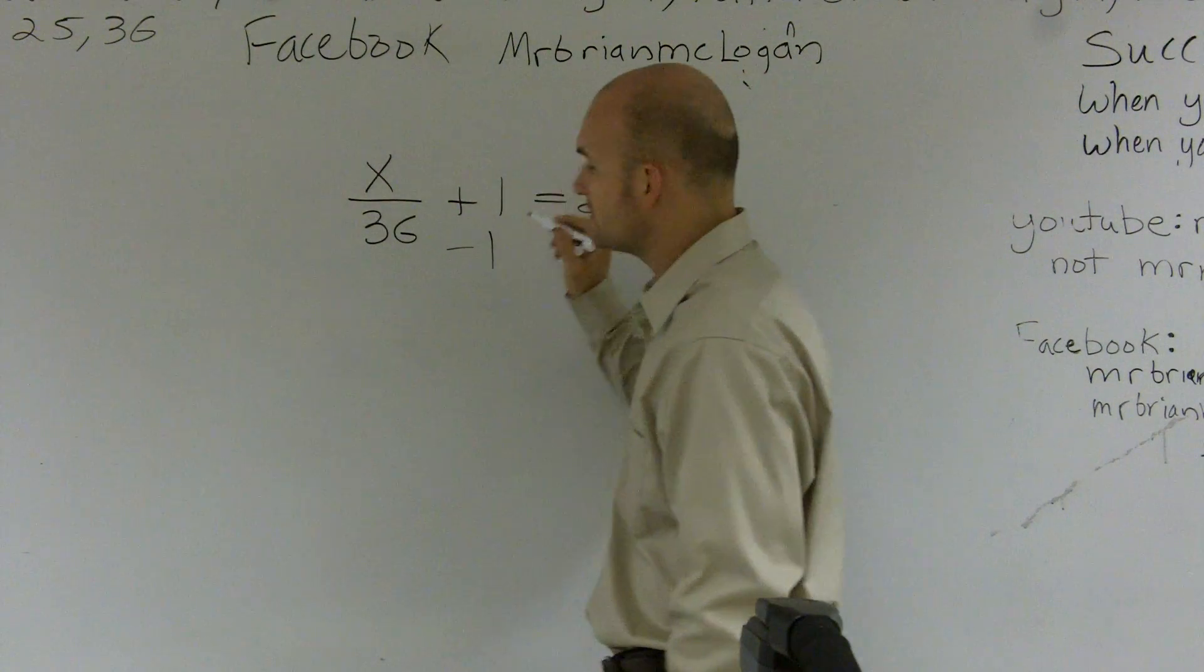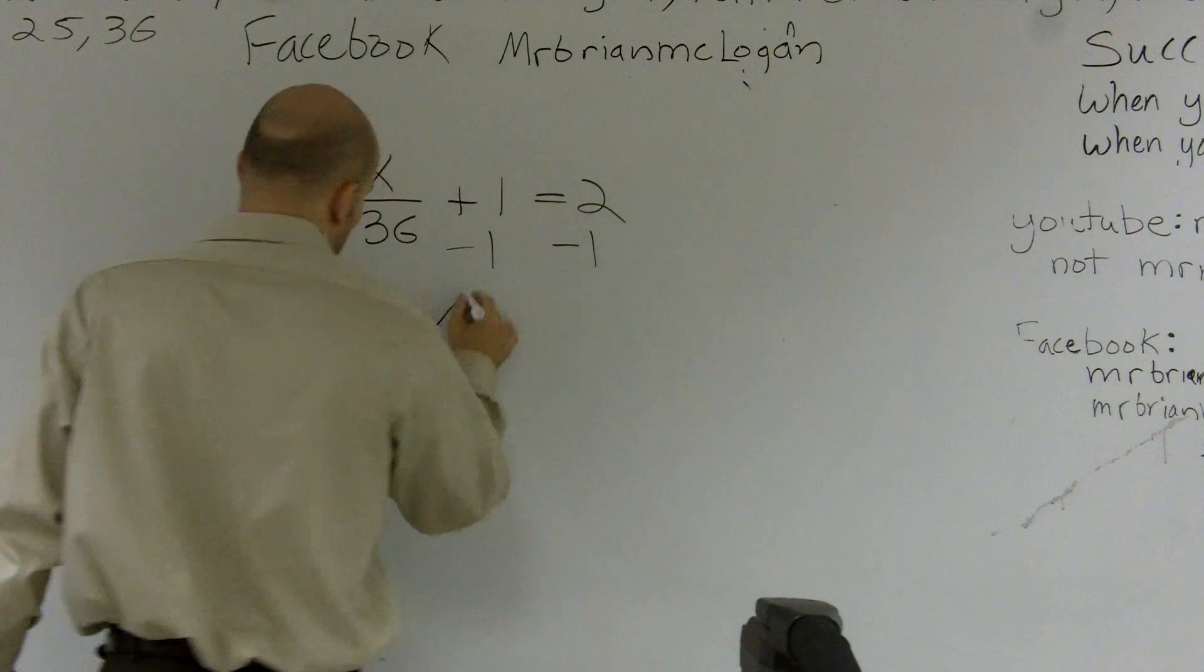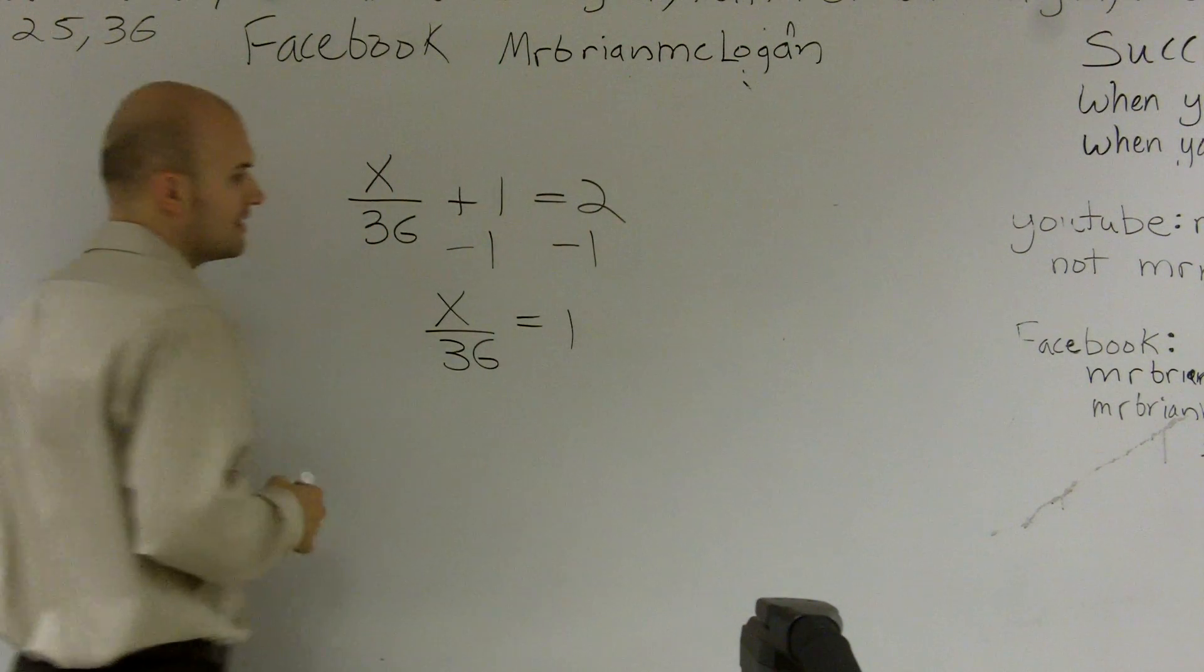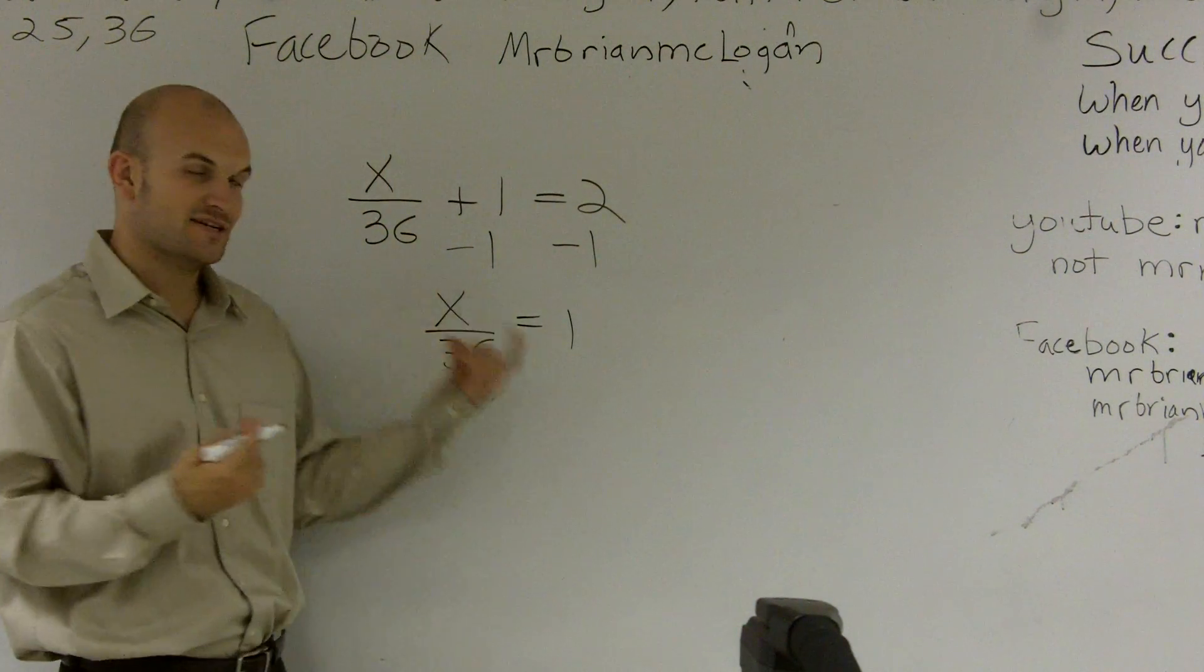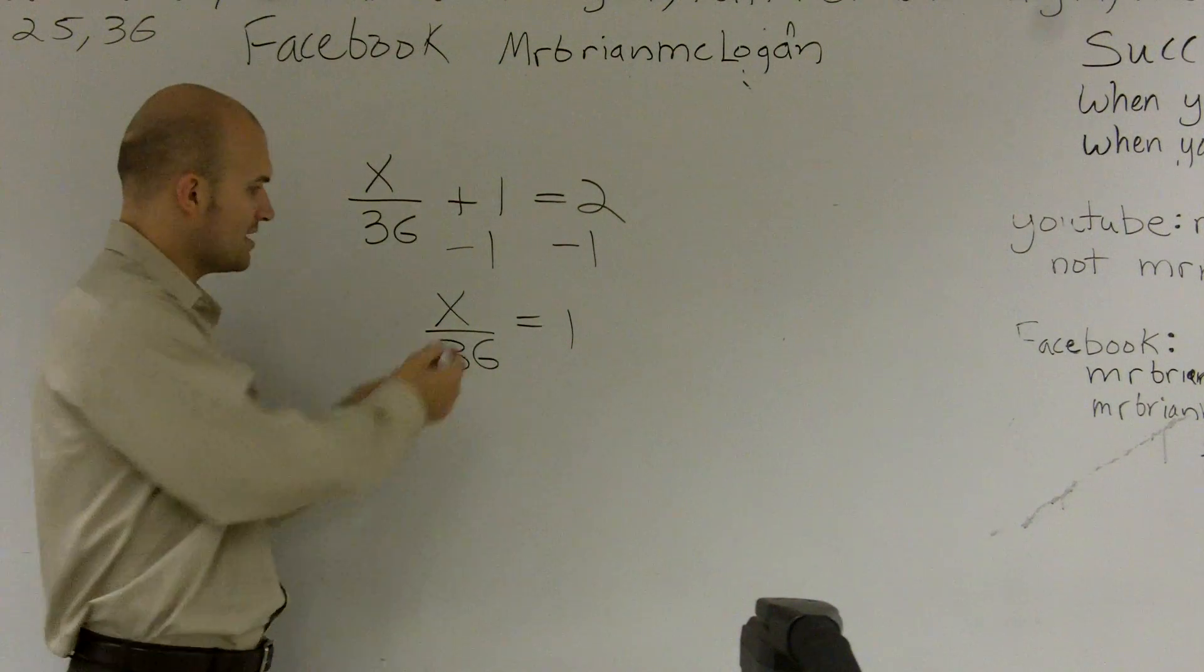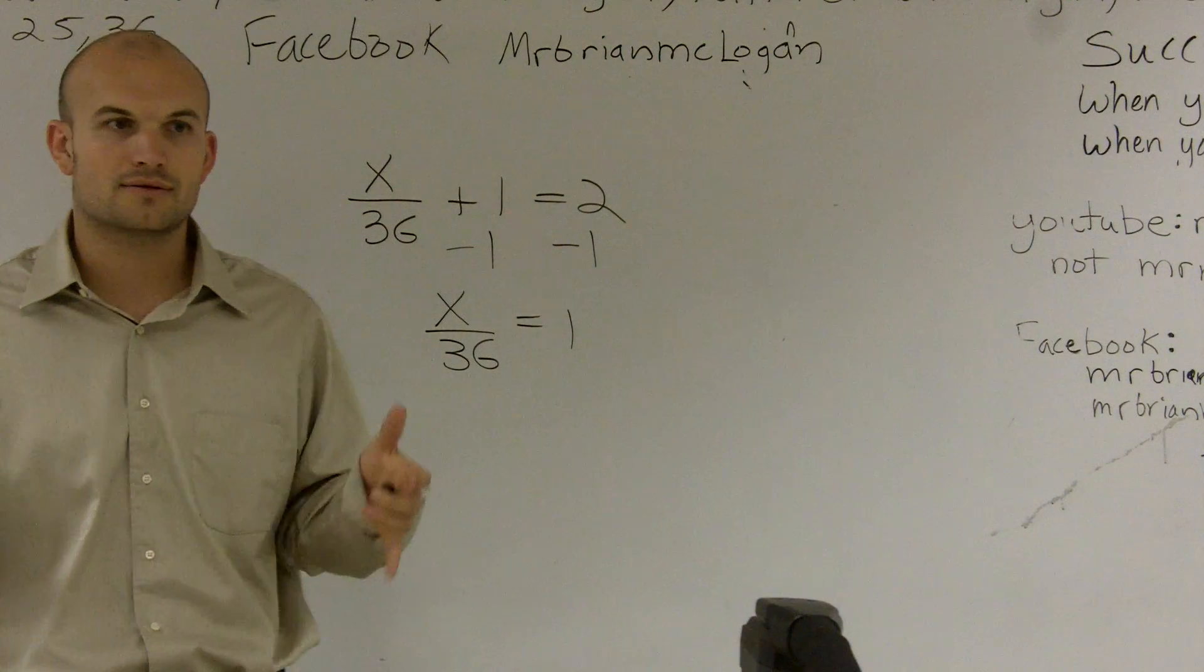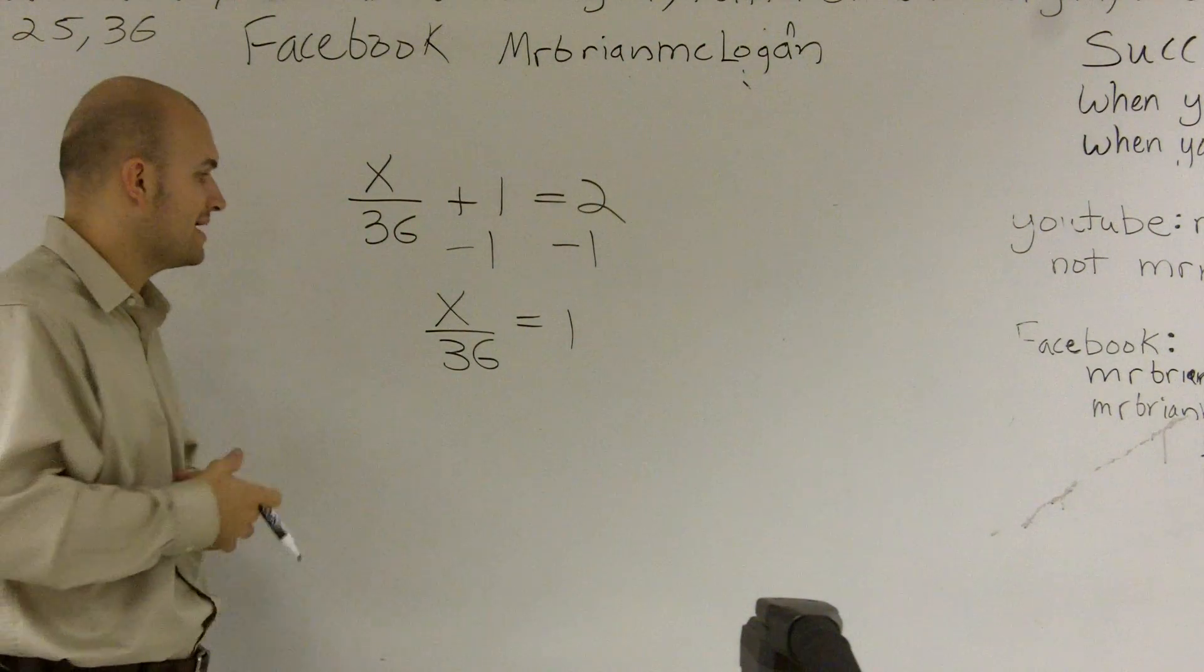Well, a 1 minus a 1 is going to give you 0. And that's helpful because what that just did was that freed up some space here on the left side. And eventually, why I'm doing this is I want to get this x by itself. Because I want to say x equals something. Because then I can actually find the value of my x.